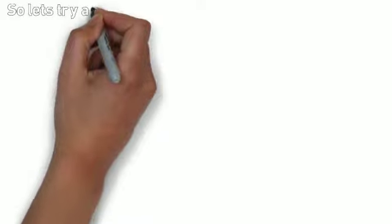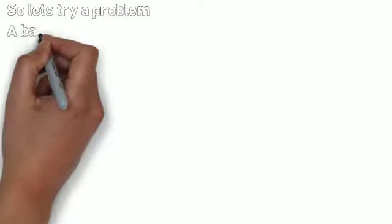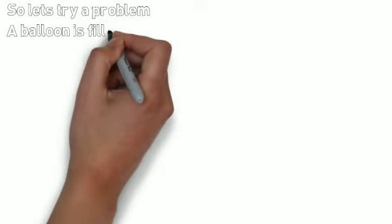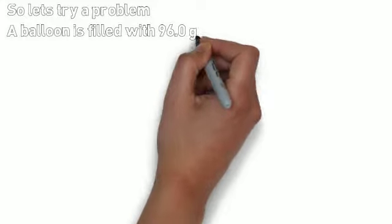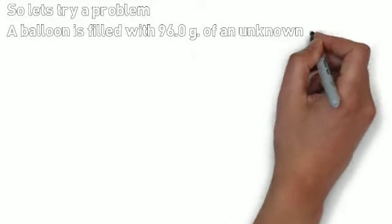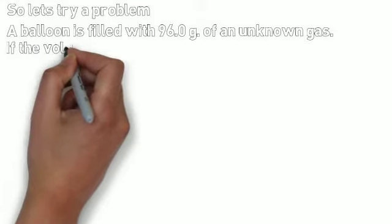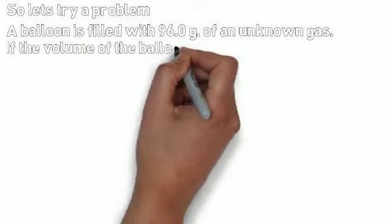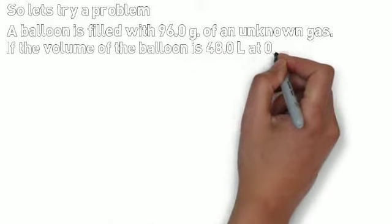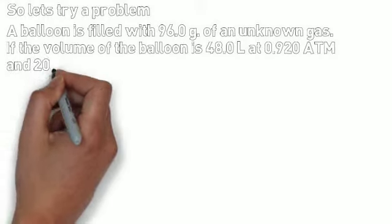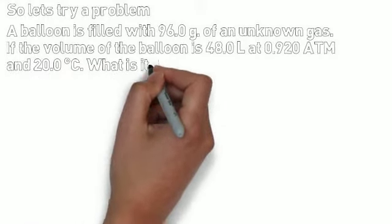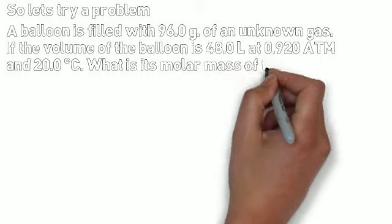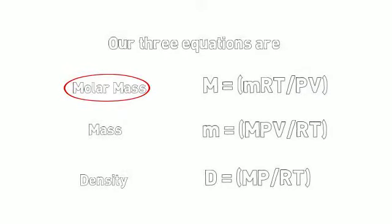We're going to work through a few problems to use these different equations to solve for molar mass, mass, or density depending on what each problem asks for. First problem: a balloon is filled with 96.0 grams of an unknown gas. If the volume of the balloon is 48.0 liters at 0.920 atmospheres and 20.0 degrees Celsius, what is the molar mass of the gas? This problem asks us to solve for molar mass, so we use the molar mass equation: capital M equals little m times RT divided by PV.